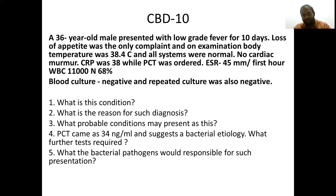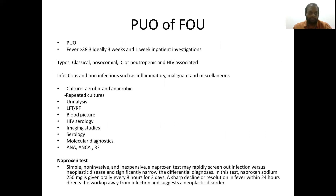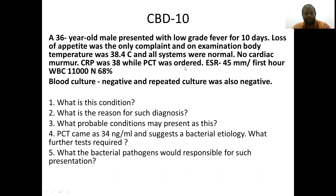The definition of PUO is fever of 38.3°C or above for 3 weeks of history, with one week of inpatient investigations where still we cannot find the etiological diagnosis. Here the patient had 10 days of fever, and after basic investigations — blood cultures, 2D echo, cardiac murmur assessment — we were unable to determine the cause. What are the reasons for such a condition? There are a lot.